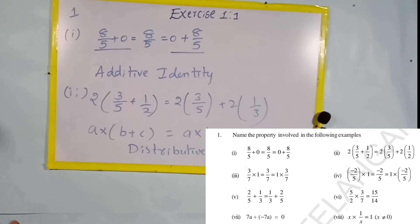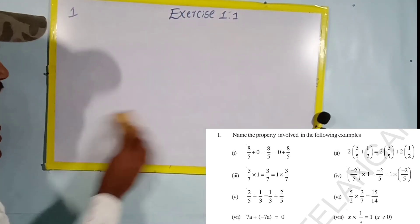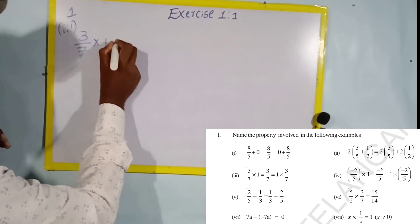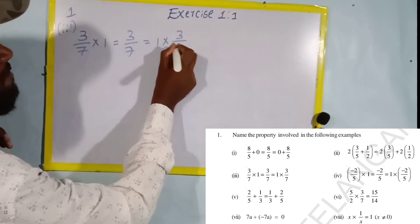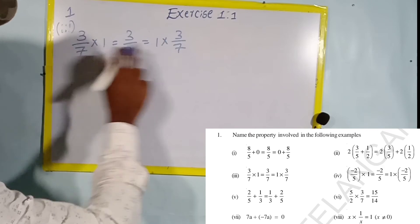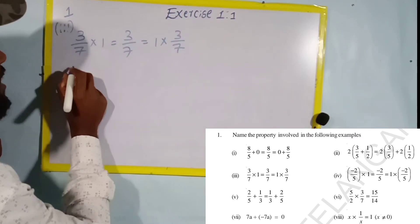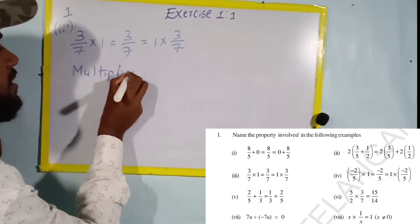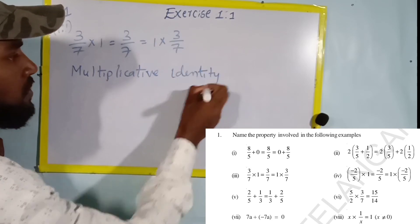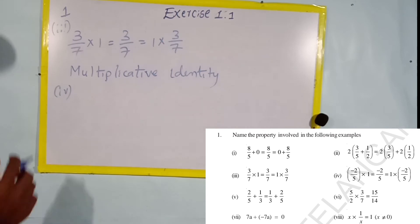This is the distributive property. Next, third one: three by seven into one. Here, one is the multiplicative identity. So the property is multiplicative identity. Fourth one: minus two into one — that is also multiplicative identity.